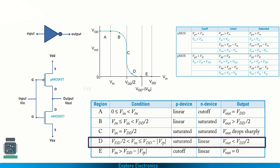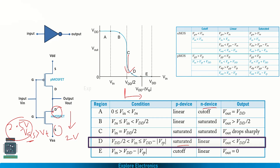In region D, the P transistor switches to saturation. The N transistor gate voltage is already more than Vt. Vgs is more than 2.5 volts, but Vds is dropping below 2.5 volts — it is around 2 volts. So the drain-to-source voltage of the N transistor is less than the gate voltage, meaning it is in the linear region. P transistor is in saturation and N transistor is in linear. The output is below VDD/2, from VDD/2 down to VDD minus |VTP|.